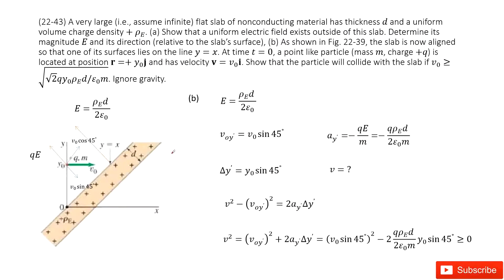The second part tells us we now place this object along the line y equal to x. We have a point charge, just like a particle. The mass is M, the charge is a positive Q, located at (0, y₀). It has an initial velocity V₀ along the x direction. We need to show the condition for this particle to hit the slab. We can consider it looks like projectile motion. The electric field density outside of these non-conducting slabs is what we just proved.